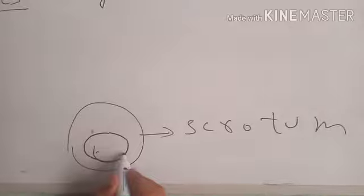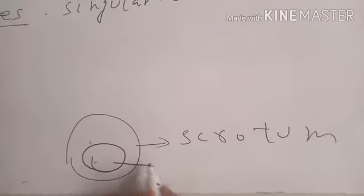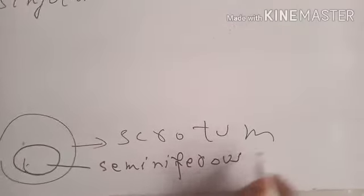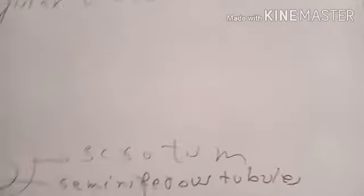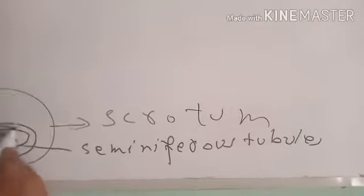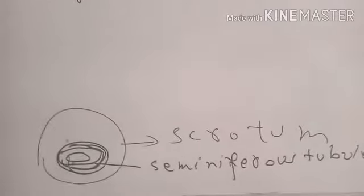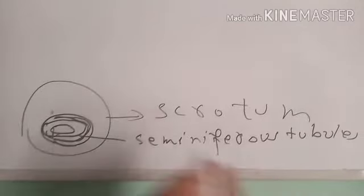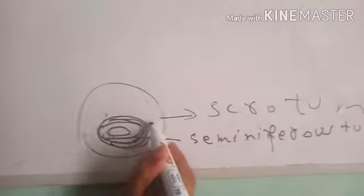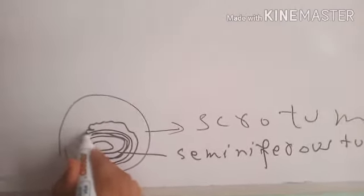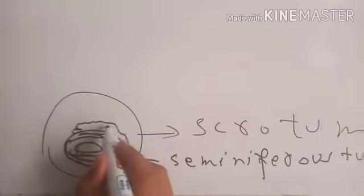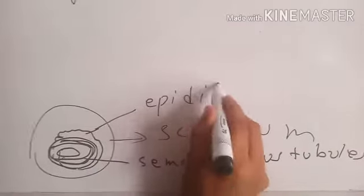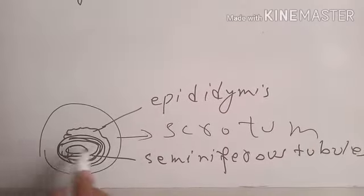The testes comprise many tubes which are called seminiferous tubules. The sperms are stored and matured in a tube which is present around the seminiferous tubules or testes. This tube is called the epididymis, which is a coiled tube around the testes, and it stores as well as matures the sperms.